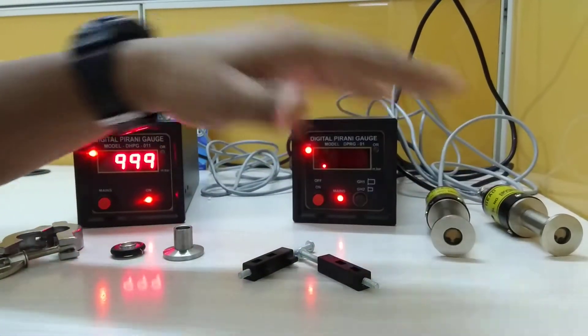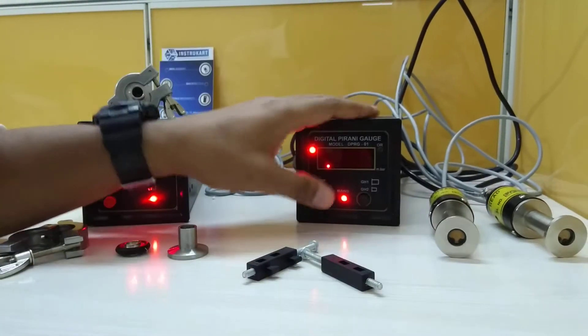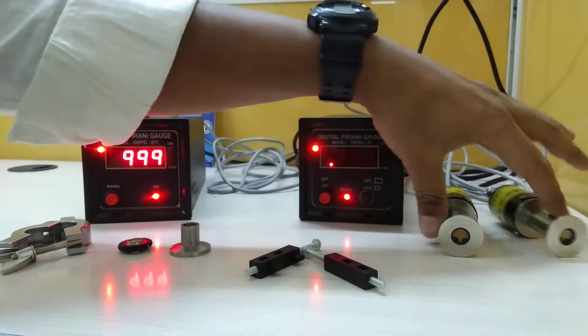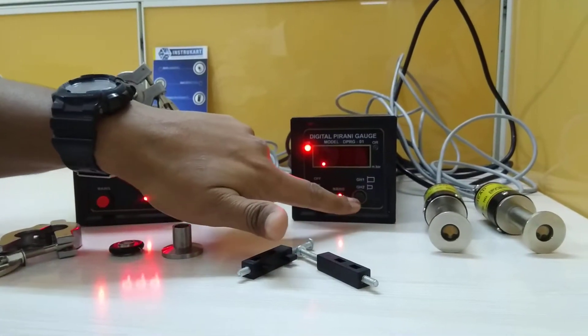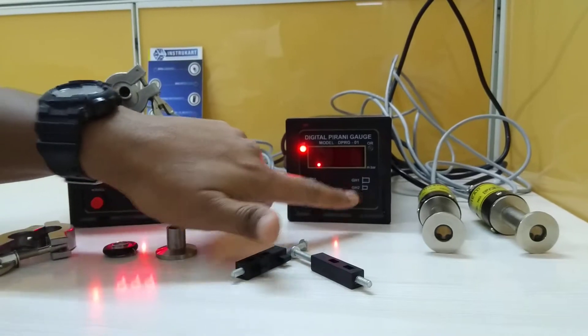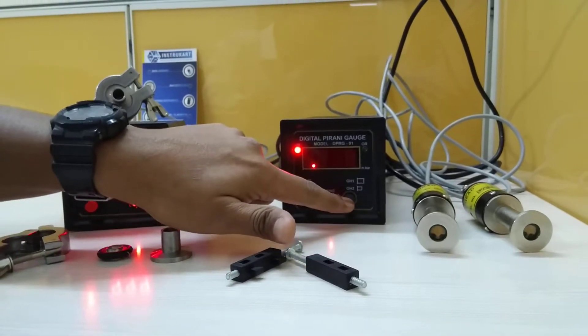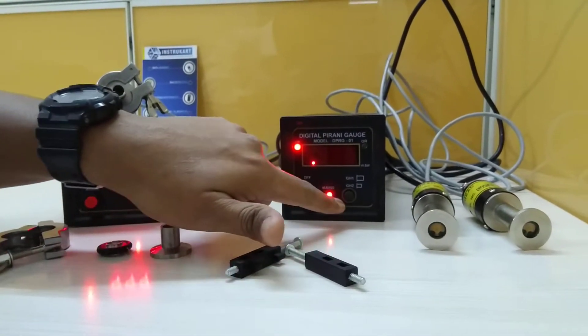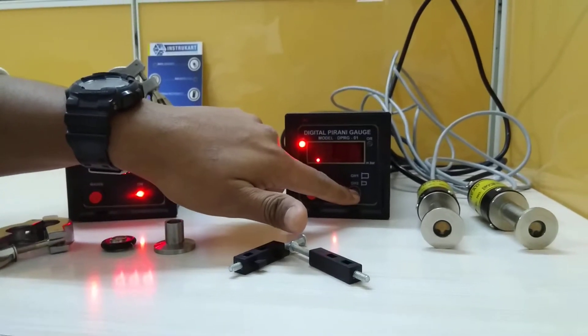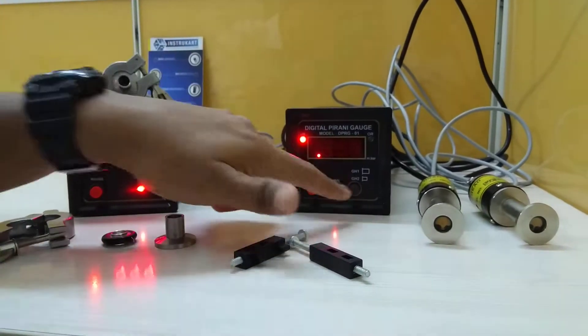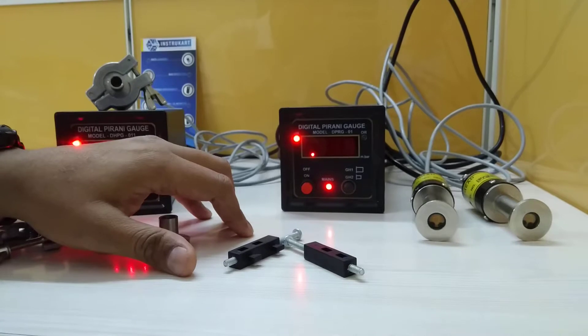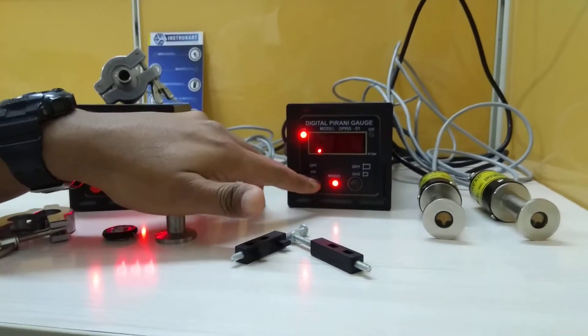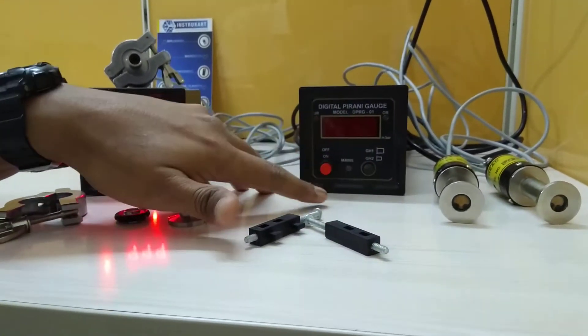Now, to see the two channels, we can toggle between these two channels with the help of this button. A single click will give the gauge head two reading, and again a click will give the gauge head one reading. And of course, we have an on and off switch.